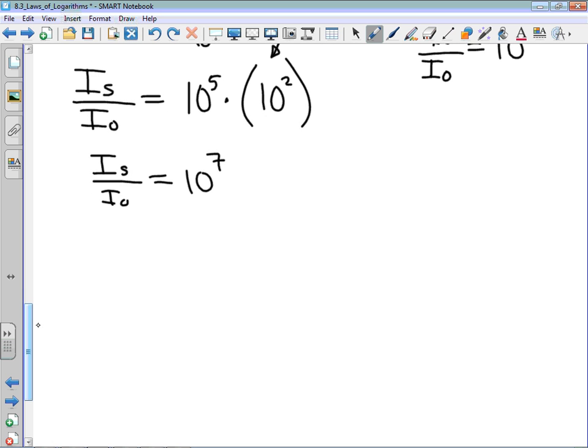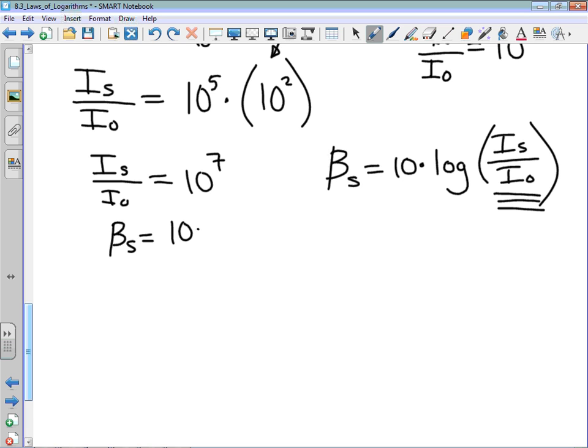The decibel reading of a safe sound is equal to 10 times the log of the intensity of the safe sound related to that baseline intensity. We now know the argument of that logarithm. The decibel reading of my safe sound is equal to 10 times the log of 10 to the power of 7. So the decibel reading of my safe sound is 10 times 7. That safe sound is 70 decibels.